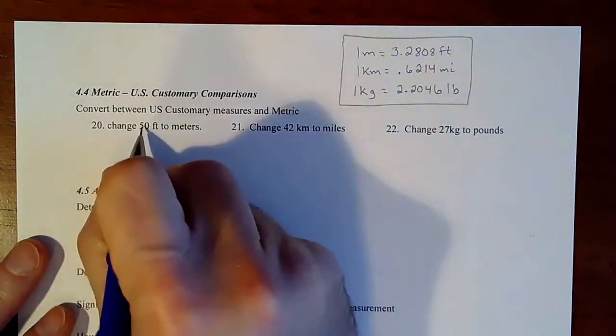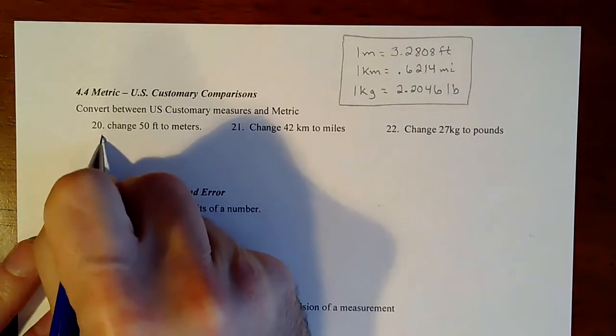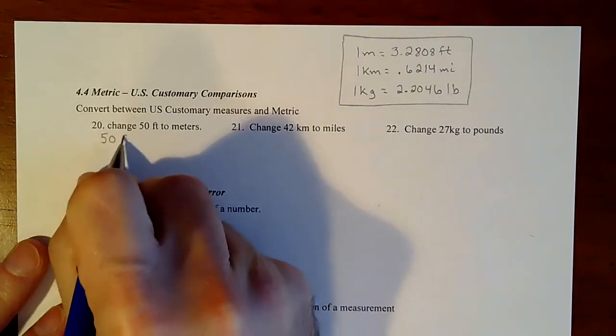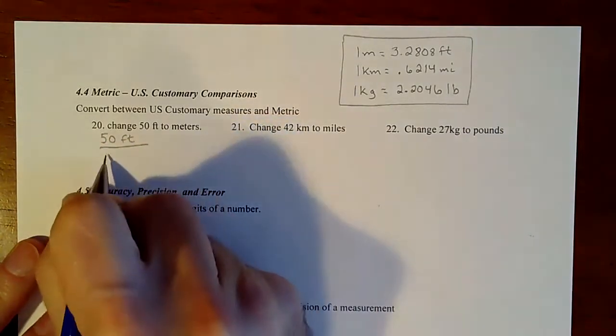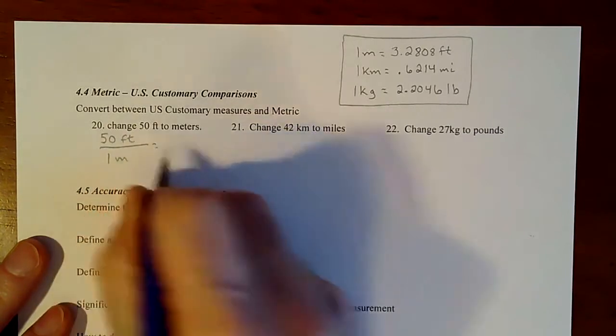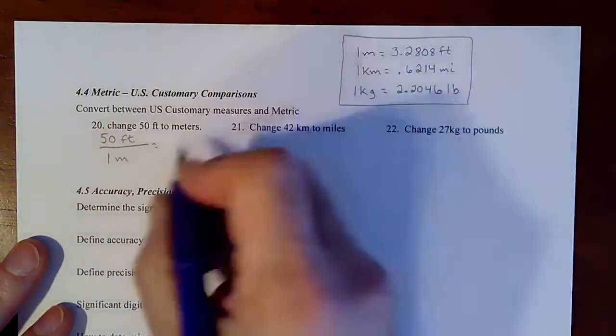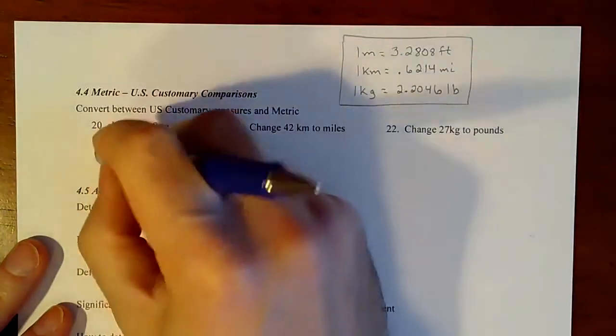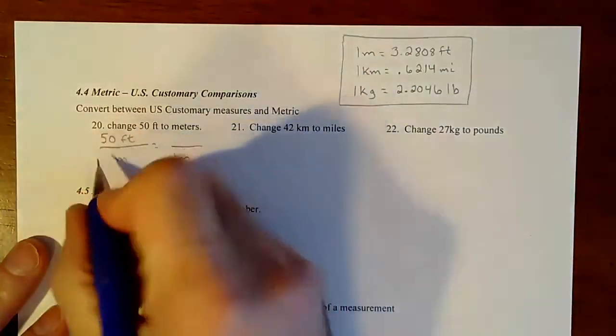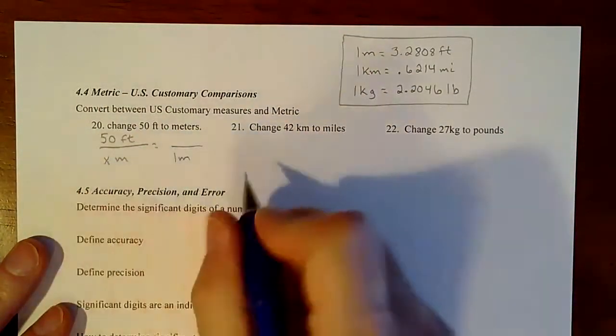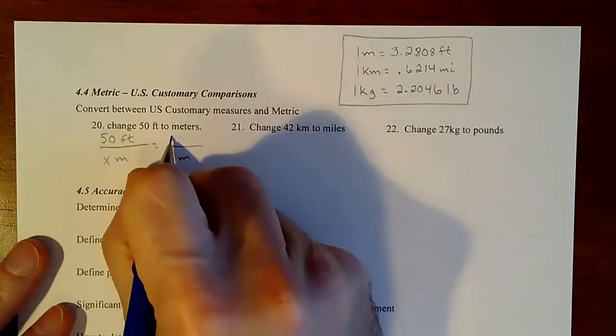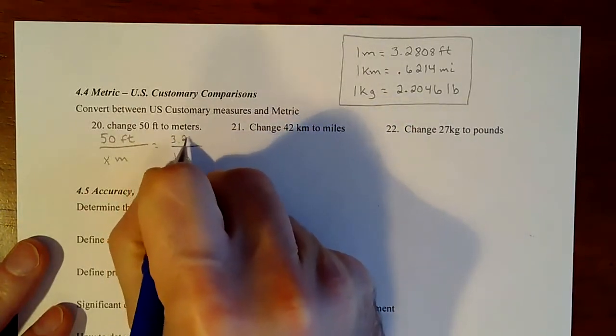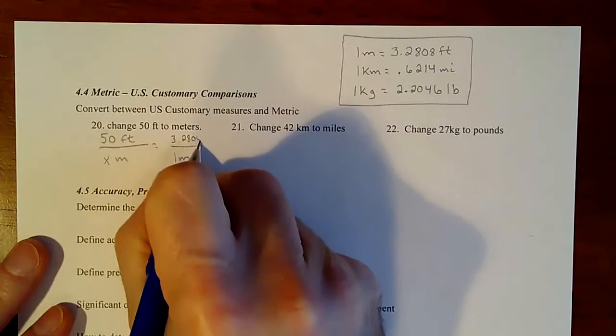So if I have feet to meters, I have 50 feet to one meter, and then I set it equal to my scale factor. I'll just make sure that my meters is on the bottom. Oops. One meter. We don't know how many meters. And then I have my 3.2808 feet.